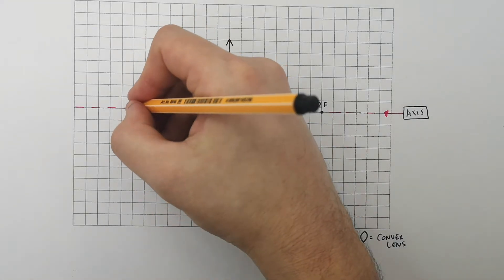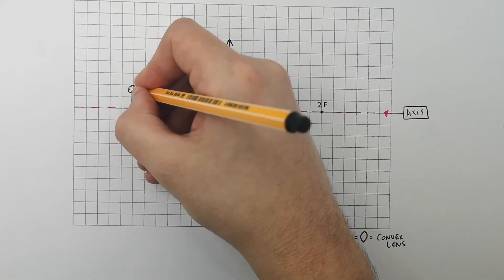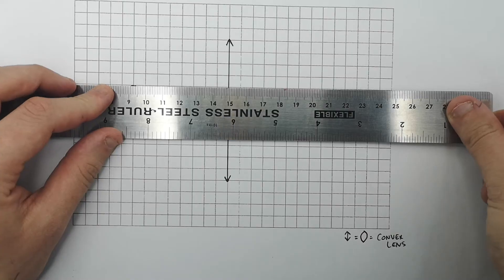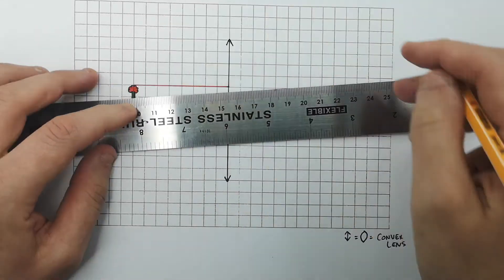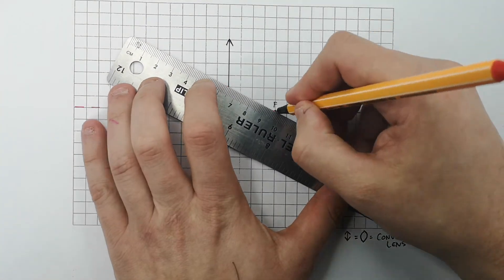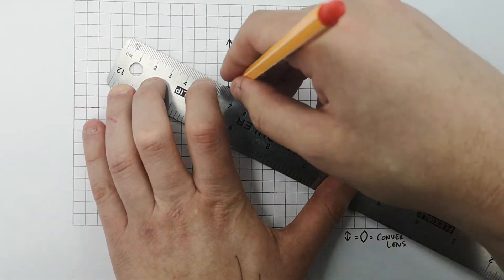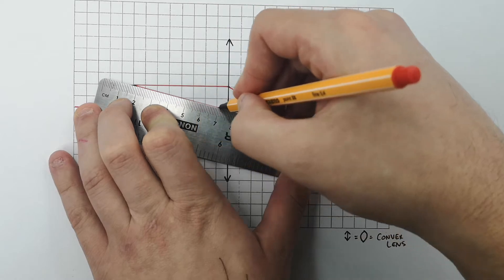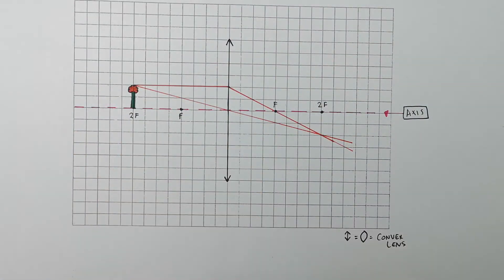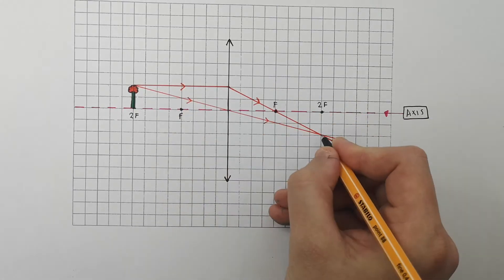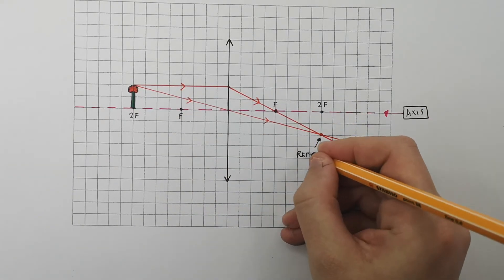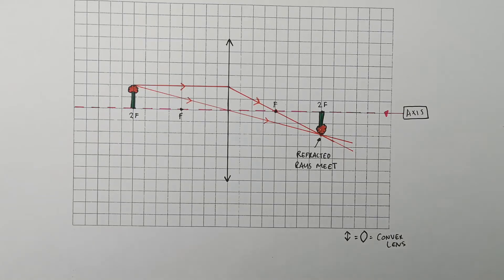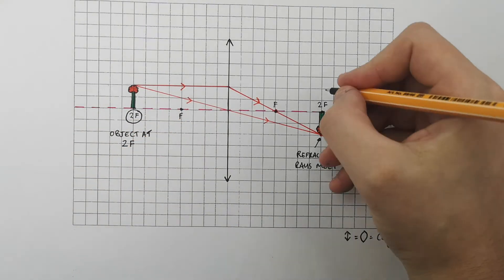I'm drawing the object on the axis at 2f — twice the distance of the principal focus away from the lens. From the top of the object, we draw the incident ray parallel to the axis, and it refracts through the convex lens down through the principal focus at f. This incident ray also passes through the center of the lens. As you can see, the rays meet at 2f. So if the object is at 2f, the image will appear at 2f.